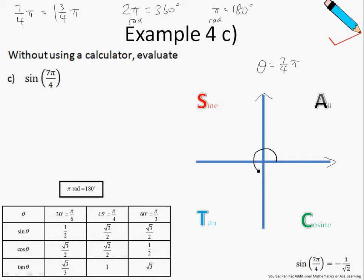If I continue moving on all the way to here, somewhere over here, this will be my theta, where theta is equal to 7 over 4 pi.